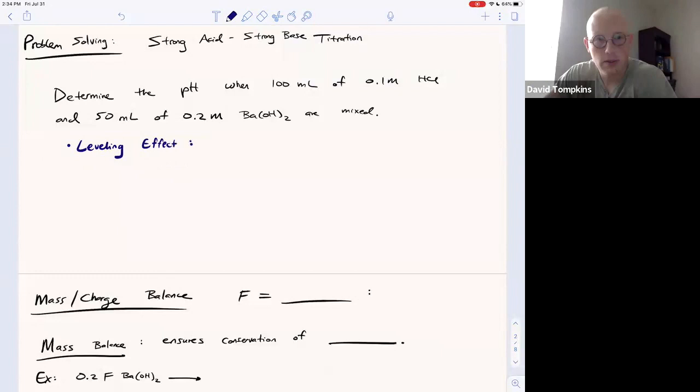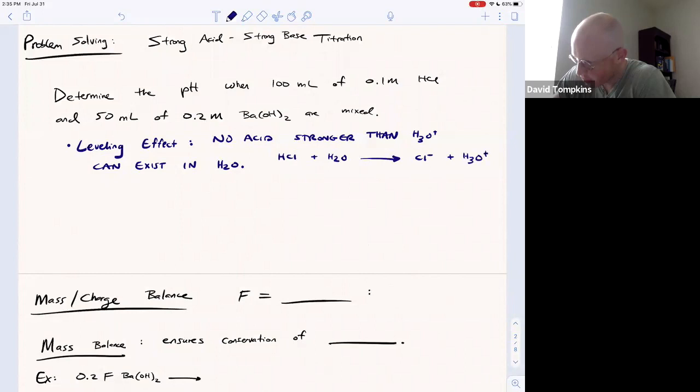The leveling effect says that for aqueous solutions where water is the solvent, no acid stronger than the conjugate acid of water, or stronger than hydronium, can exist in water. So when you throw a strong acid in there, that strong acid such as HCl in this example is going to react irreversibly with water.